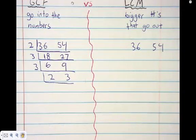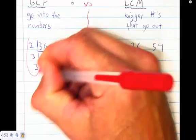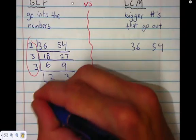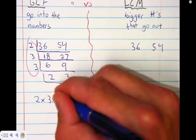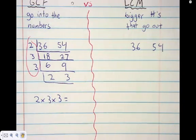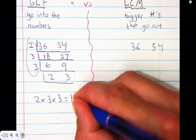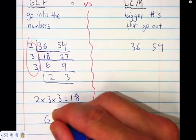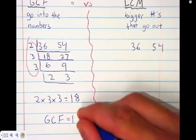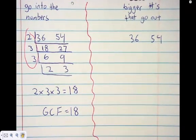Does anything go into 2 and 3? We just take the left side - what's outside. Two times three times three will be our answer. Two times three is six, six times three is eighteen. So the GCF equals 18.